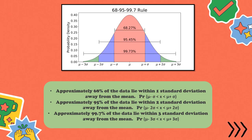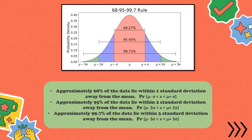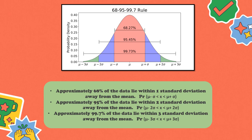Last is the 99.7% — approximately 99.7% of the data lie within three standard deviations away from the mean. That range covers the 99.7%. The formula is the same as the first parts, but the standard deviation is multiplied by three.